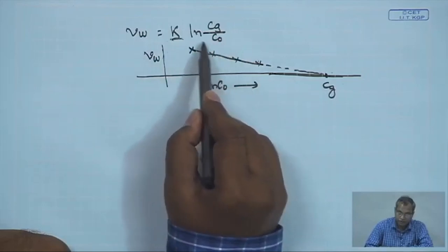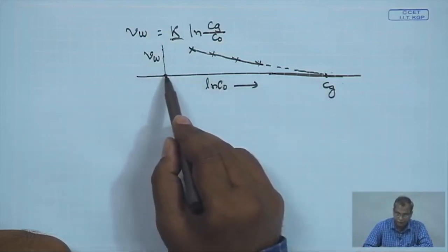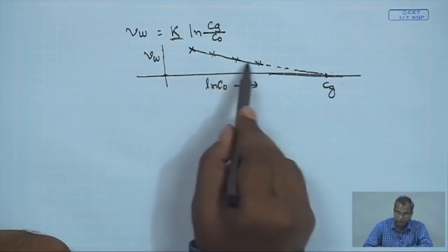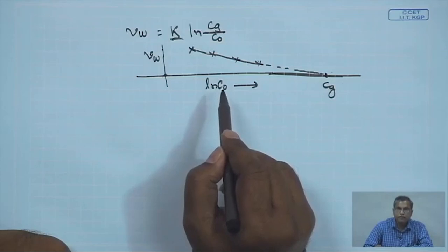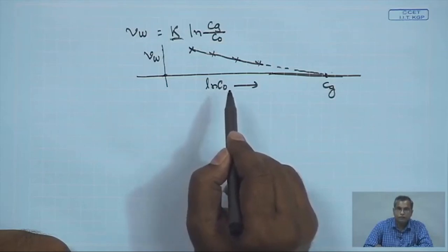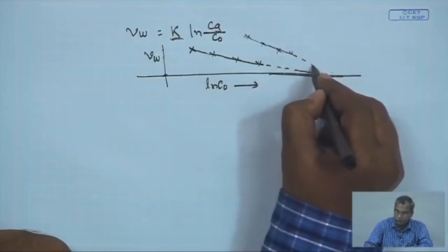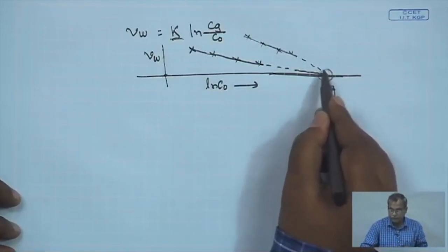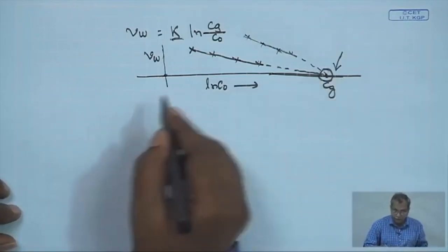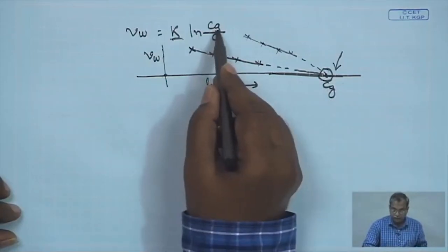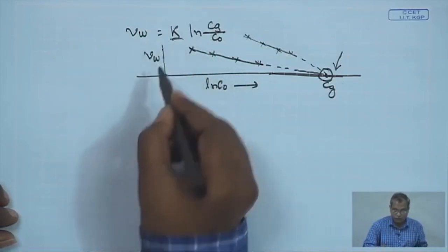When C_naught equals C_g, ln(1) = 0, so the flux is zero there. In an actual experiment you always get some finite value of flux, so the line is extrapolated to obtain the gel layer concentration. Conducting the same set of experiments at another value of turbulence or mass transfer coefficient gives another line, but extrapolating it converges to the same value of C_g. Once C_g and the mass transfer coefficient are estimated, the permeate flux at steady state can be calculated for any known C_naught.